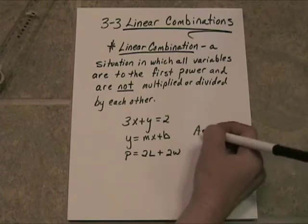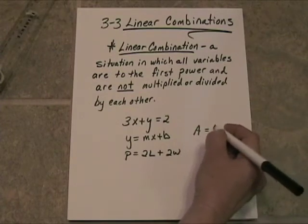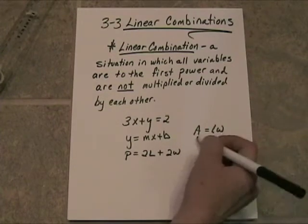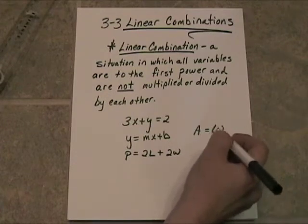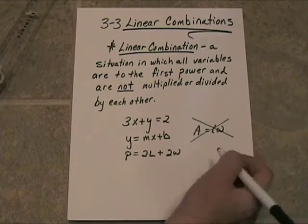Something like area equals length times width would not be a linear combination because those two variables are being multiplied together.